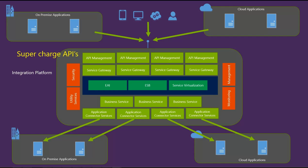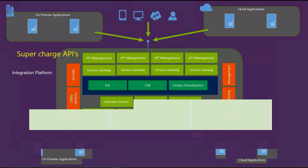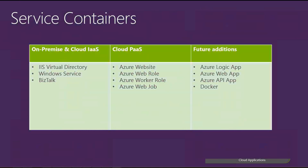The next bit is really about the containers. The different types of components could live in different service containers. So on-premise, or structured in the cloud, we might have things hosted in IaaS — Windows services or possibly BizTalk. We could have cloud platform as a service, deploy stuff as websites, web roles, worker roles, web jobs. And in the future we view some containers as being things like Logic Apps, API Apps, or possibly Docker down the line.